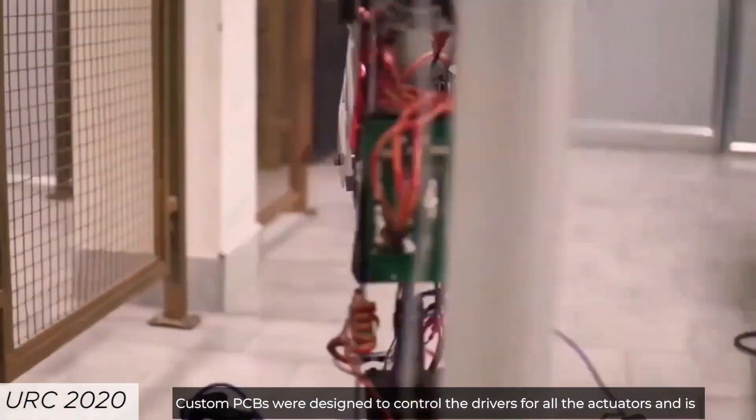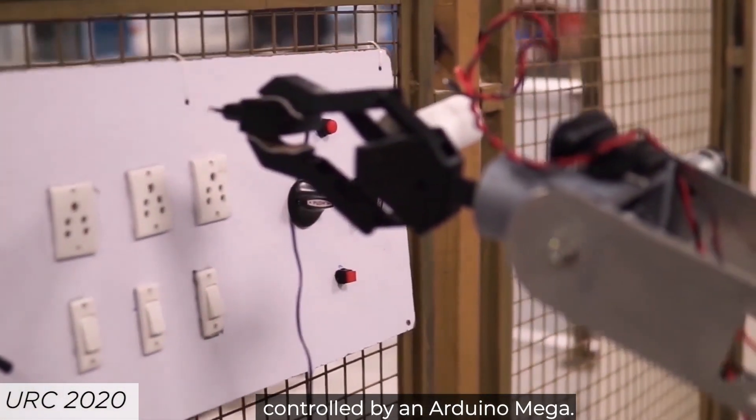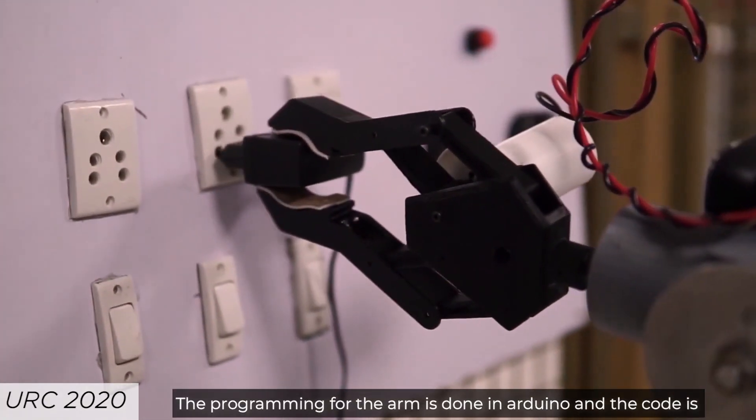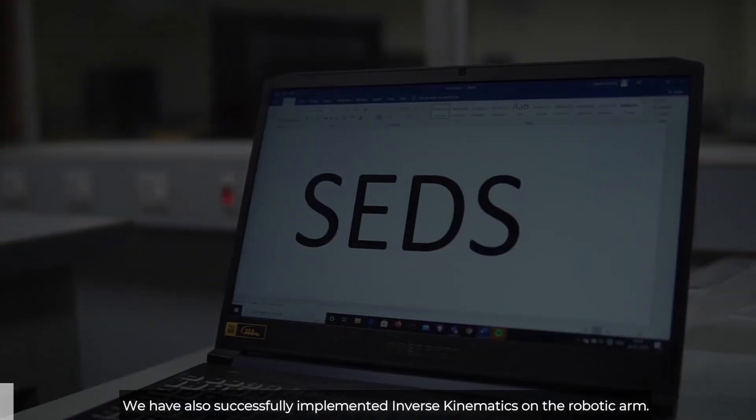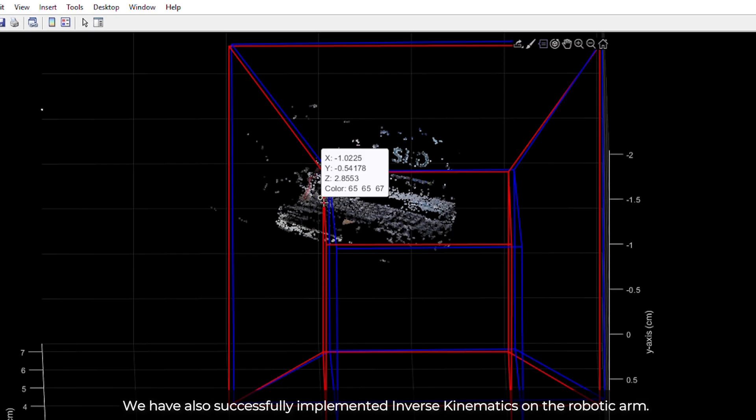Custom PCBs were designed to control the drivers for all the actuators and are controlled by an Arduino Mega. The programming for the arm is done in Arduino and the code is designed to easily support inverse kinematics for human-like movements. We have also successfully implemented inverse kinematics on the robotic arm.